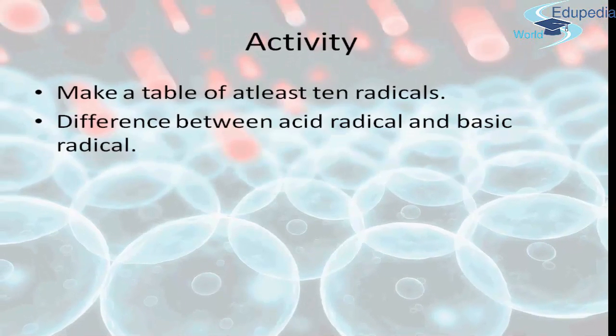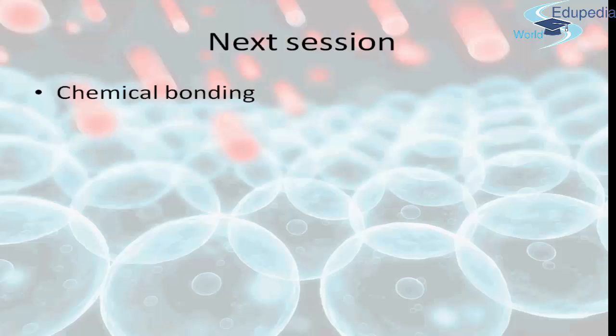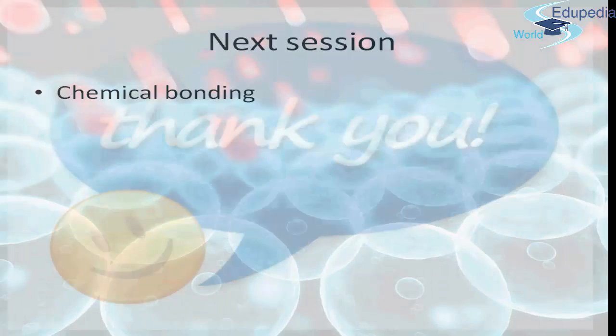Now friends, I end up with this session. This was a small session. Now it's your turn to do an activity. You just have to make a table of at least ten radicals. You can separate them into positive and negative ions, that is, you can separate them into basic radicals and acid radicals. There's one more question: the difference between acid radicals and basic radicals. So in the next session, we'll be learning chemical bonding. Thank you.